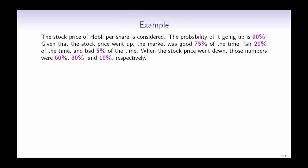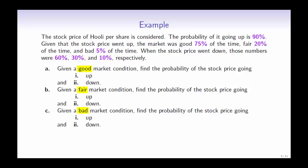The stock price of Hooli per share is considered. The probability of it going up is 90%. Given that the stock price went up, the market was good 75% of the time, fair 20% of the time, and bad 5% of the time. When the stock price went down, those numbers were 60%, 30%, and 10% respectively. Given each market condition, find the probability of the stock price going up and down.